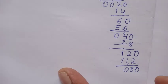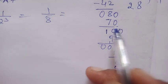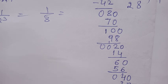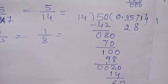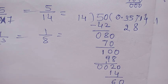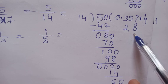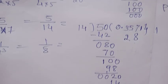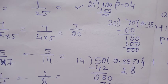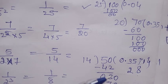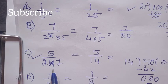120 minus 112 is 8. Take one more 0, it becomes 80. Now if I continue this, I'm getting the same digits in the quotient repeating. This is non-terminating. The answer is 5 upon 2 into 7, which is the third option, C. This is the correct one.